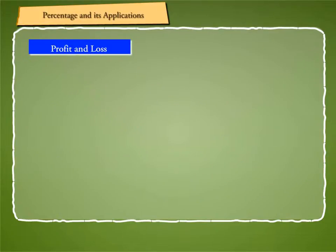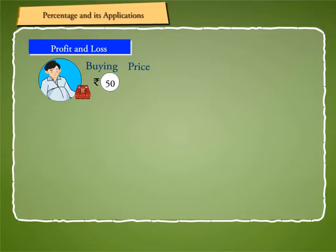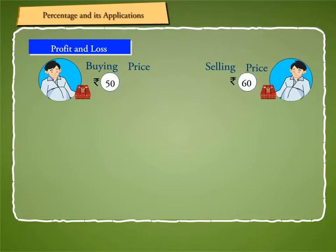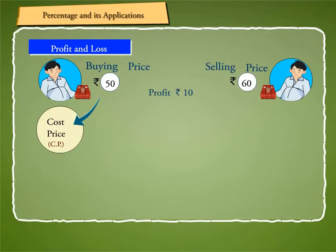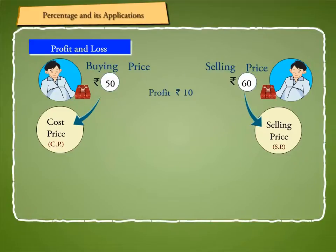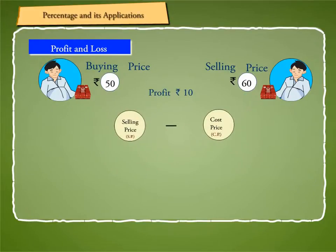Let us now study about profit and loss. If a man buys an article for Rs. 50 and sells it for Rs. 60, he makes a profit of Rs. 10. Here, Rs. 50 is called the cost price (CP) and Rs. 60 is called the selling price (SP) of the article. The difference between selling price and cost price is called profit or gain. In case the selling price is less than the cost price, the difference is called loss.